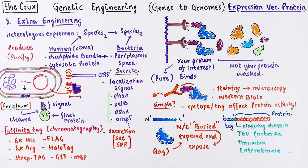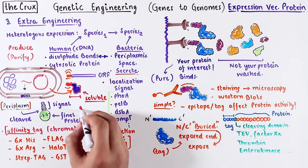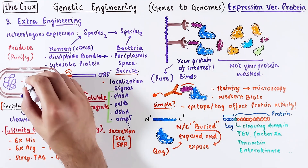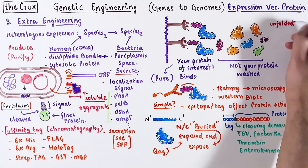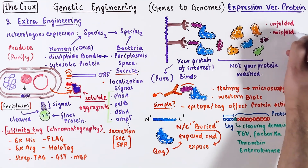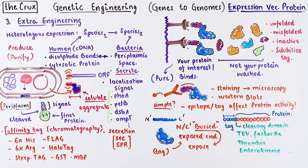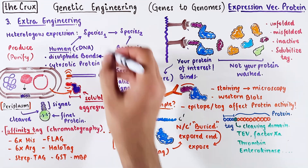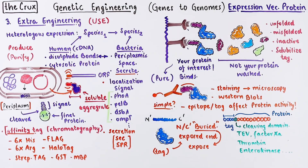This is by no means a comprehensive list of tags. When producing proteins, it is possible that your protein is not soluble and therefore aggregates in a cell, which can cause protein misfolding and inactivity. To prevent this, you add a solubilization protein sequence that improves protein stability. There are many other things you can engineer to a protein depending on the use and application. In the next video, we will use this information to build specific protein expression vectors.